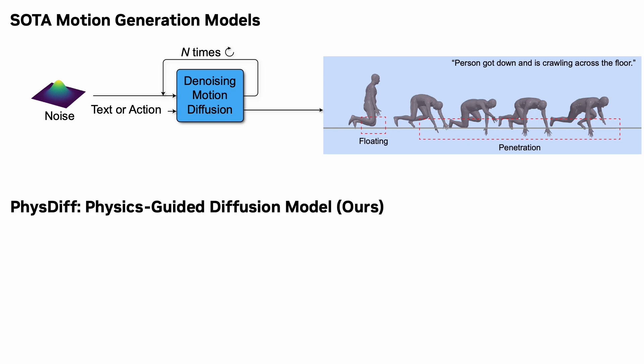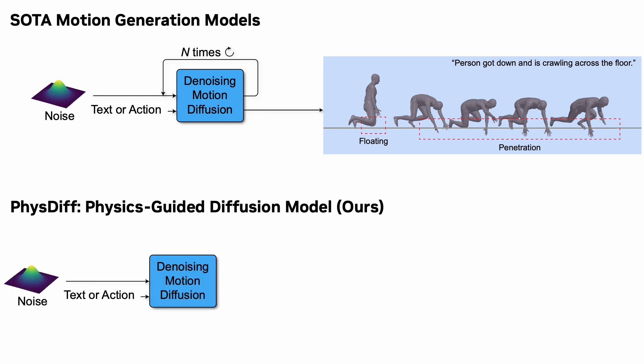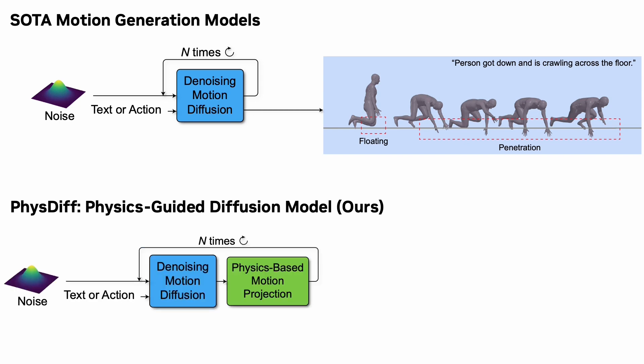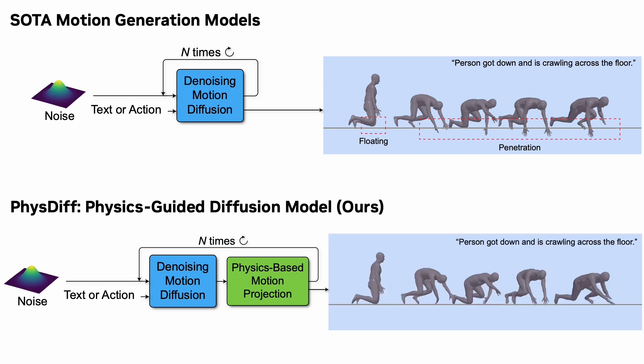Our physics-guided diffusion model, PhysDiff, addresses this problem by embedding a physics-based motion projection module into the diffusion process to enforce physical constraints. The motion generated by our model does not have the physical artifacts often observed with state-of-the-art motion generation models.